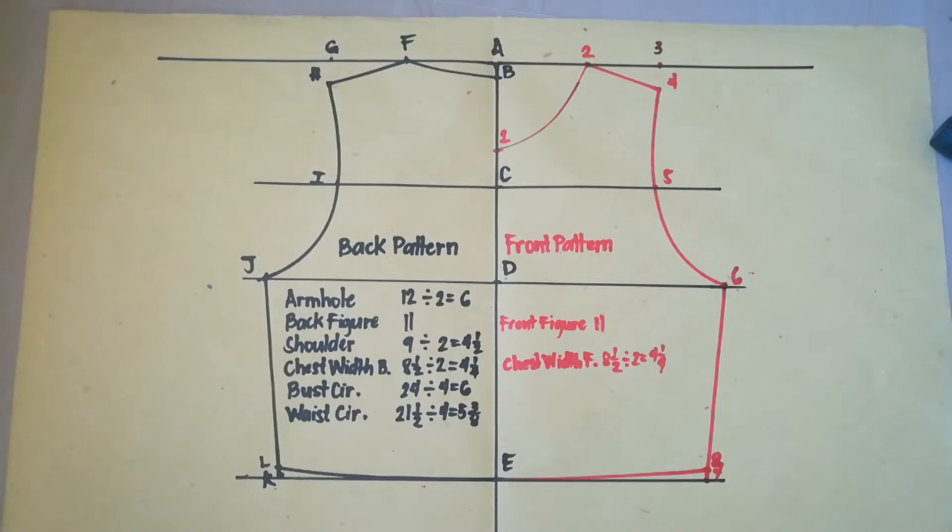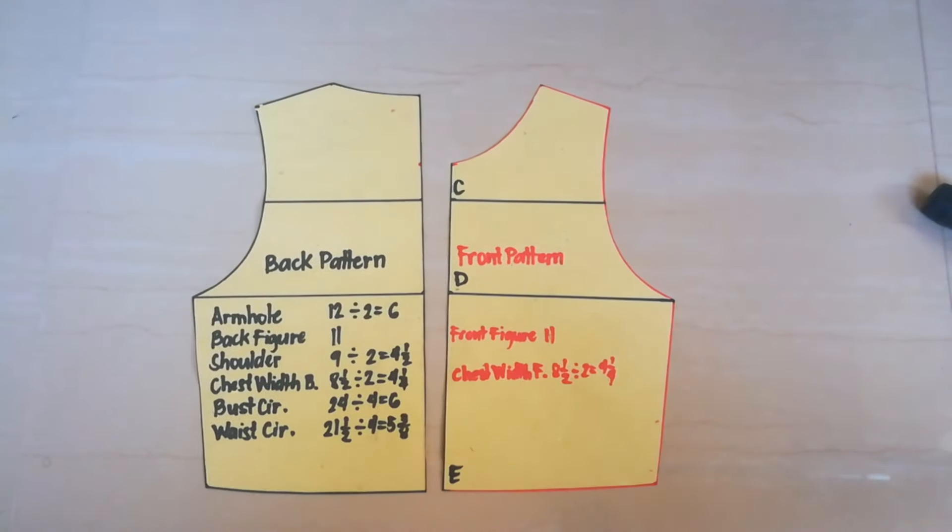And now, we are done with the basic back and front bodice pattern. When you cut it, it will look like this. Now, you can draft your own pattern. Enjoy drafting!